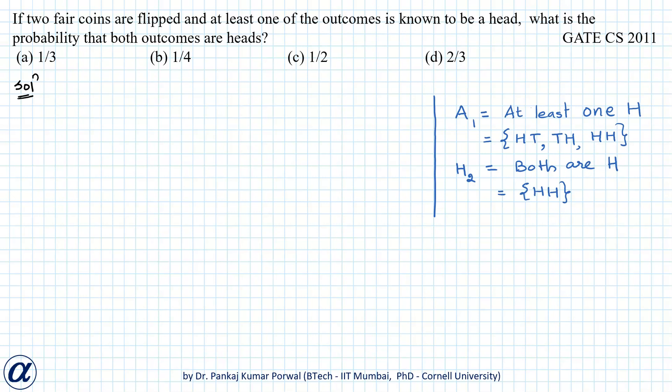In this question, we are given that two fair coins are flipped and at least one of the outcomes is known to be head. We want to find the probability that both the outcomes are heads.